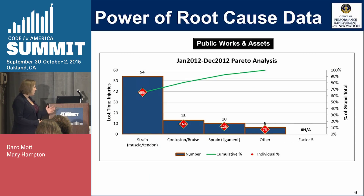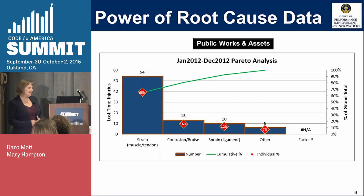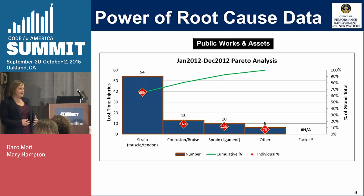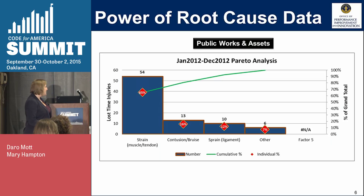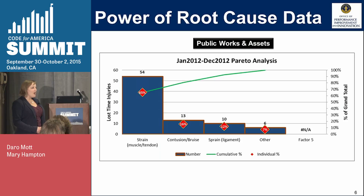If we just look at that performance data, it's pretty difficult to know how to improve. In Louisville, we've combined performance data with root cause data — if you look at our LouieStat website, you can see how we not only look at performance but also look at the root cause. We use what is called a Pareto chart, which puts your top five categories of things that are causing the problem. When we looked at the data system for 2012, we found 54 strains, 13 bruises, and 10 sprains driving that elevated injury rate.